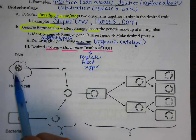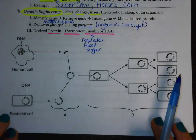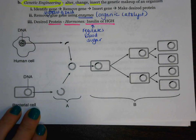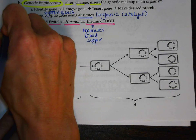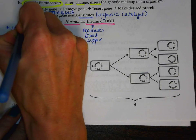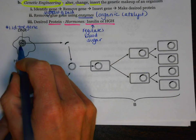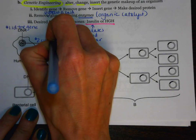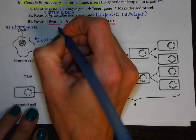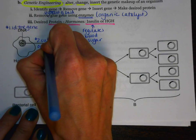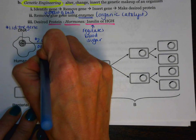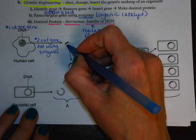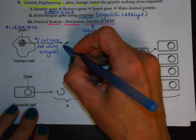Looking at the diagram, this is a classic picture of genetic engineering used on the regents exam. Here we have DNA — this is all the DNA — but we just want a tiny little segment. So our first step is to identify the gene. Once you have the gene, you cut the gene using enzymes. Now you have just a little tiny segment — that's your gene of interest.